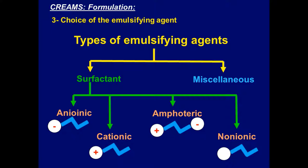In acidic pH, an amphoteric molecule will show its anionic properties, and in alkaline pH it will show its cationic properties. So the nature of the amphoteric emulsifier depends on the pH of the medium — it may act as anionic or cationic according to the pH. Finally, we have non-ionic surfactants which carry no charge.